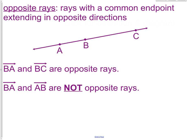We have ray BA and we have ray BC. Notice how both of them have a dot at B and extend in opposite directions. That is why we call them opposite rays.